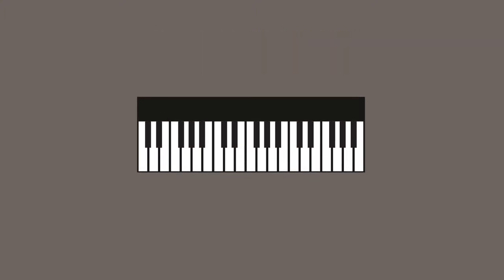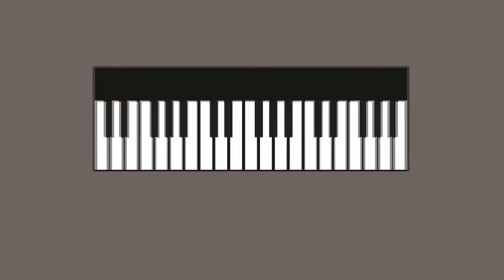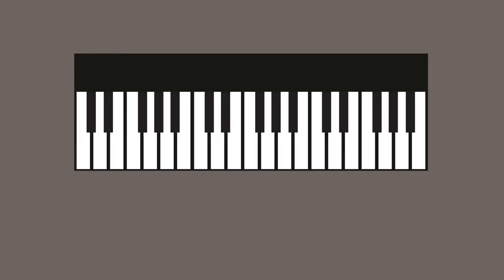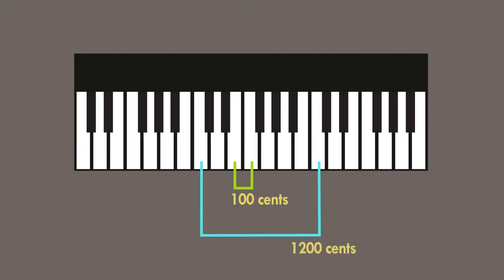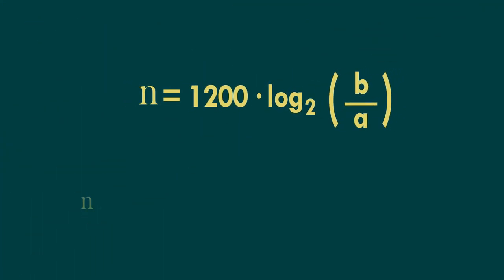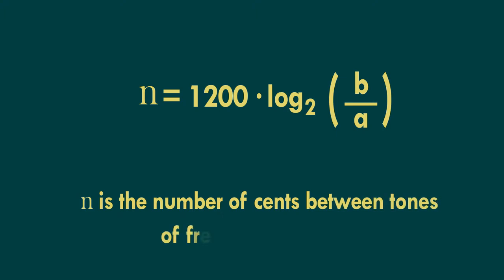The cent is a logarithmic unit of measure used for musical intervals. Each semitone in our 12-tone equal temperament has 100 cents, so an octave, which has 12 semitones, would have 1,200 cents. If we know the frequencies of two tones, we can easily calculate the number of cents between them.